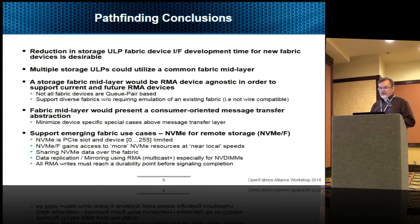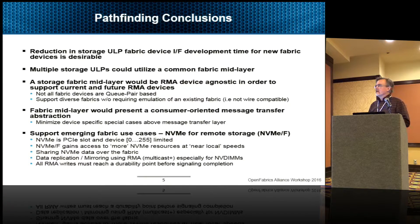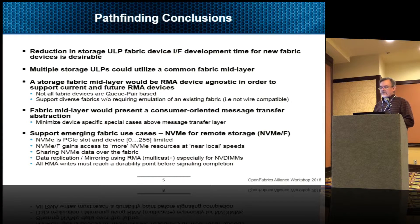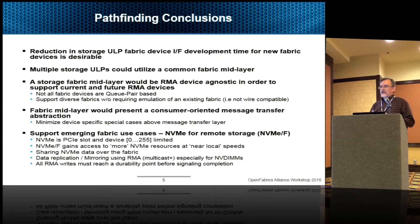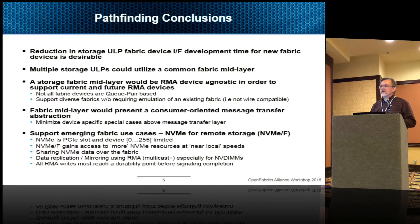It should be RMA device agnostic in order to support current and future RMA devices. Not all devices are Q-Pair based — I had a talk about this yesterday and this was not a well-defined point that everybody agreed on. And then support diverse fabrics without requiring emulating an existing fabric, so as to allow innovation. The fabric mid-layer could present a consumer-oriented message transfer abstraction, much like libfabric, taking the view from the application coming down rather than from a hardware view coming up. And then support for emerging fabric use cases — NVMe over fabrics is the one with the most interest in this working group.